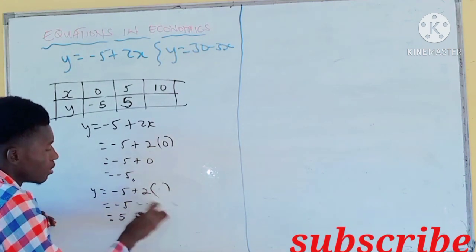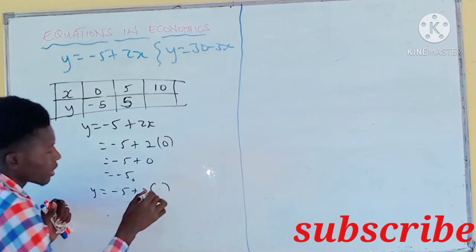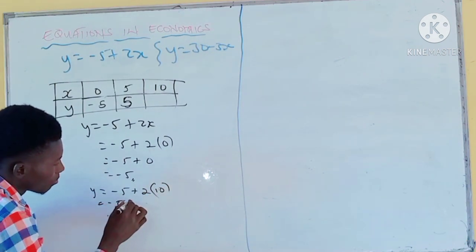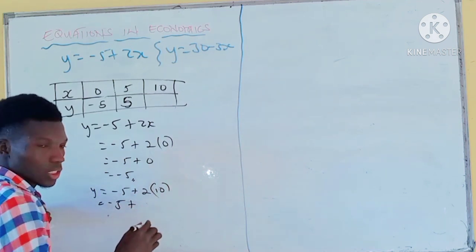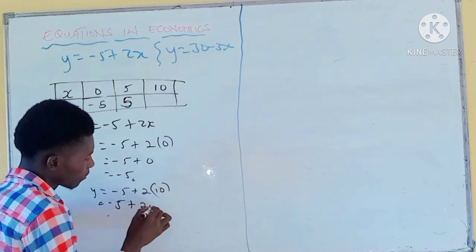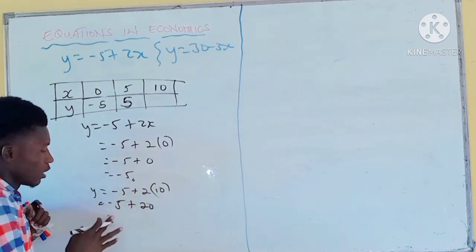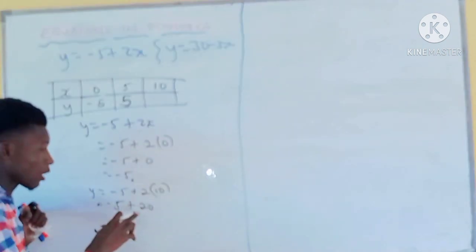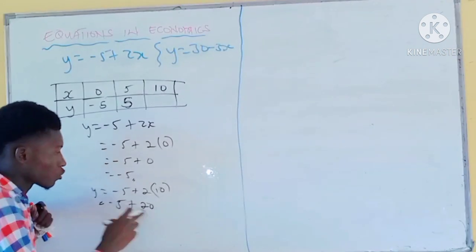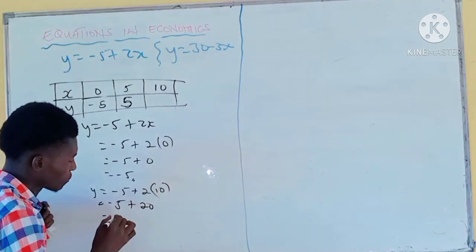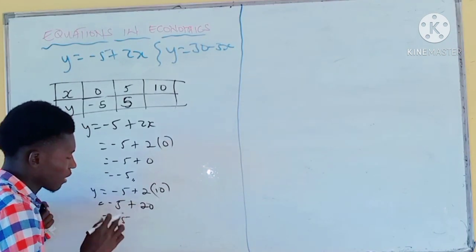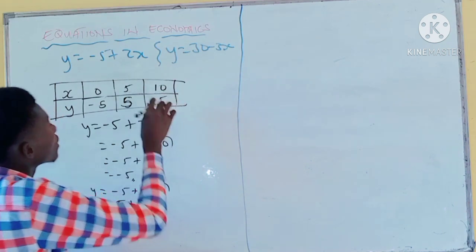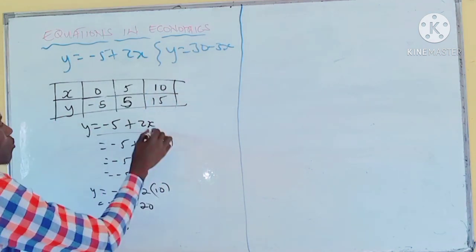When x is 10: minus 5 plus 2 times 10, which is 20. Minus 5 plus 20 — subtract and the bigger number is 20, so 20 minus 5 is 15. You put 15. That is only for the first equation.